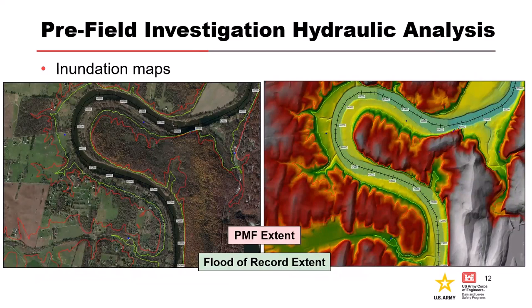Model inundations for the flood of record and the probable maximum flood are both very important in the pre-field investigation process. The area elevations between these two inundation boundaries — between the flood of record and the PMF — is typically where paleoflood investigation sites will be targeted. We want evidence of paleofloods that were larger and higher and older than the flood of record; evidence at or below the flood of record likely would have been disturbed by that event. On the other end, we don't need to look for PSI or NEB evidence much higher than our estimated PMF, since that is a theoretical upper limit. For example, if we found a non-exceedance bound much higher than our PMF, that's saying a flood bigger than the PMF has never happened here — which we were already pretty confident in before going to the field.